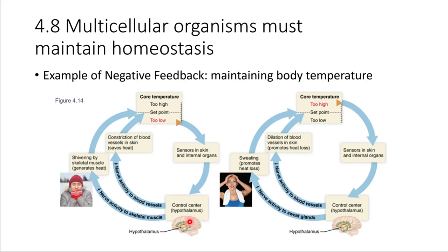The hypothalamus is going to compare what the sensors are telling it versus the actual set point. If there's a significant difference between those two, the hypothalamus will do a couple of different things. For one, it will activate your skeletal muscles — it overrides them even though you weren't trying to move them — making them contract and relax very quickly. That's called shivering.